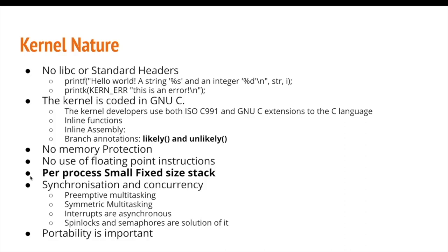The kernel has a very small stack size for every process. The kernel also supports synchronization and concurrency. It supports preemptive multitasking, meaning that if a process is running, the kernel can preempt it and reschedule a different process. Symmetric multitasking means that the same kernel code can run on multiple processors simultaneously. All these features are supported with the help of spin locks and semaphores. Portability is also important for the Linux kernel, as Linux supports different architectures.